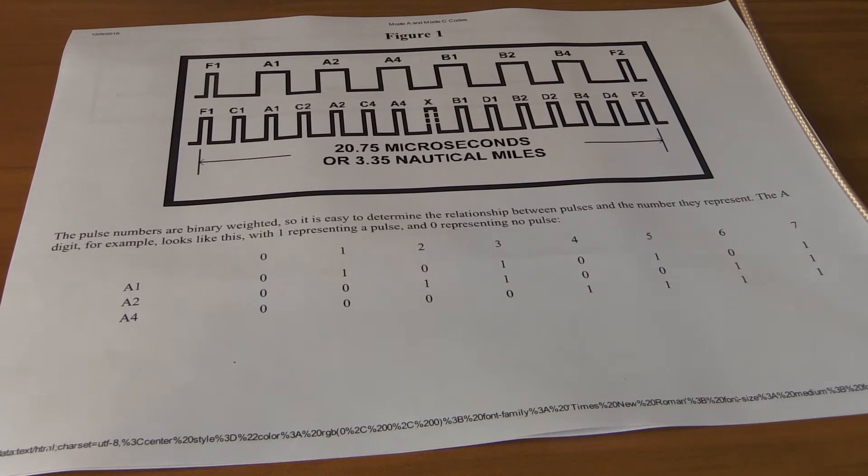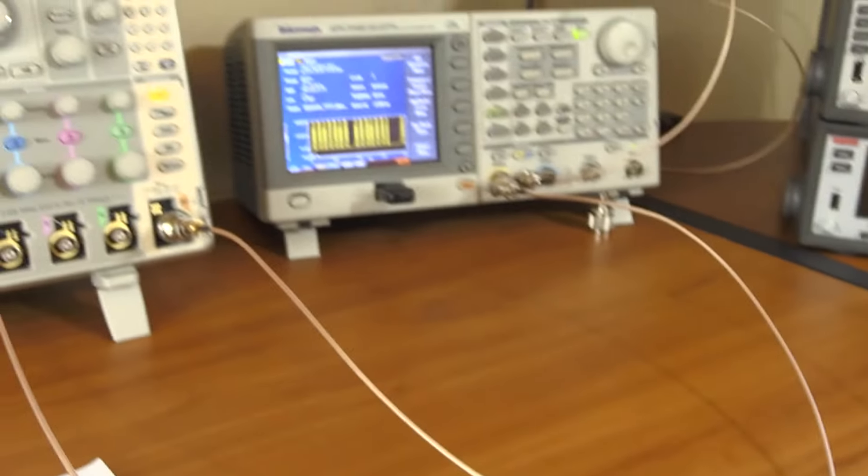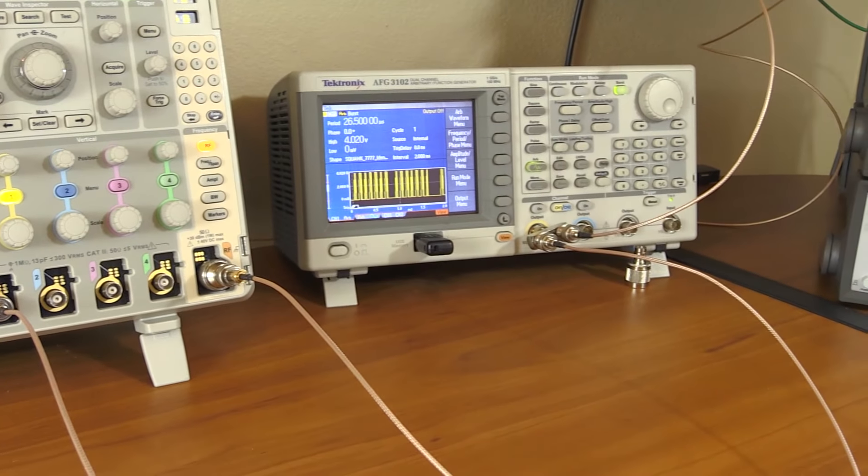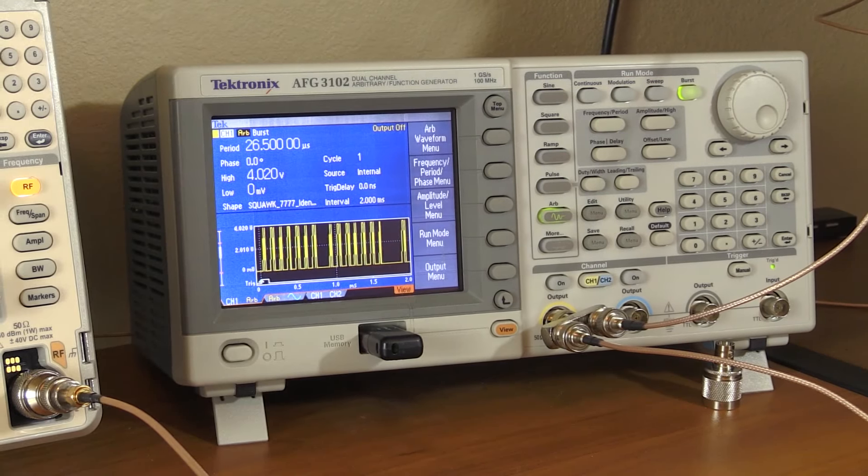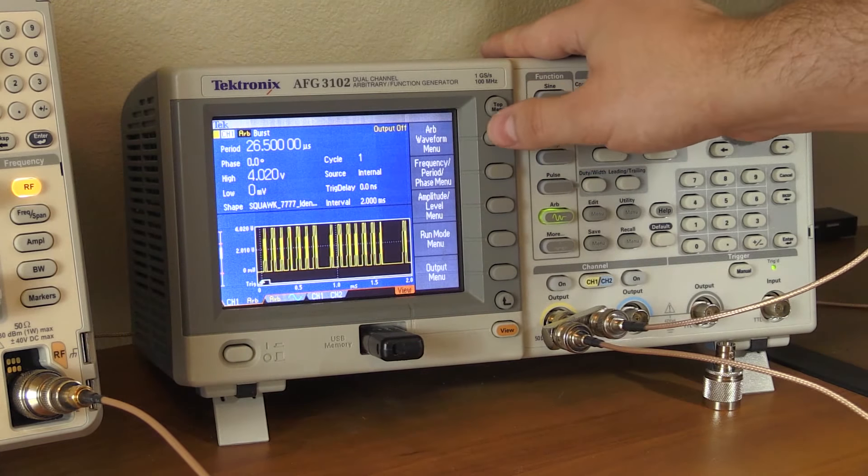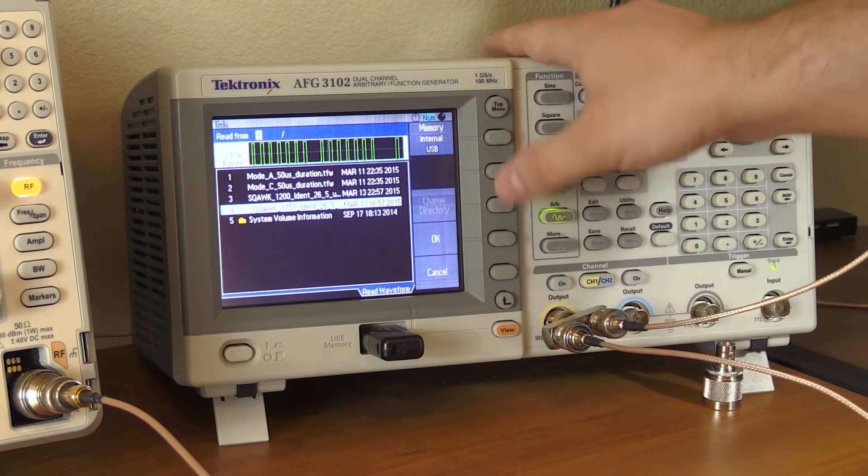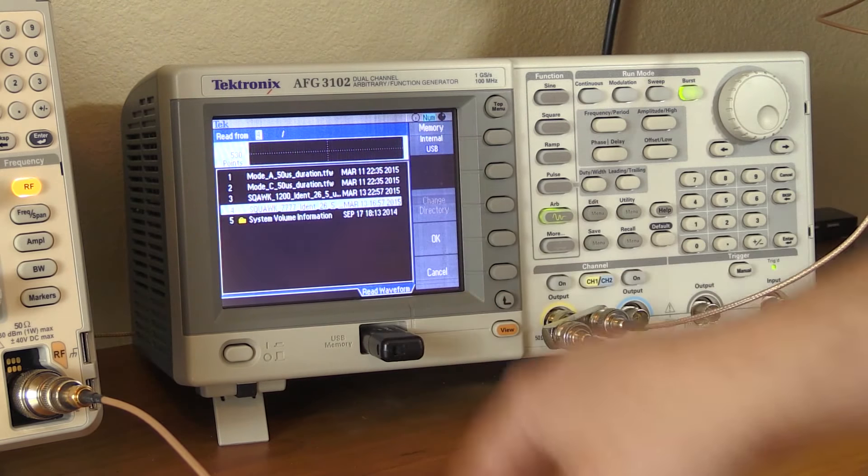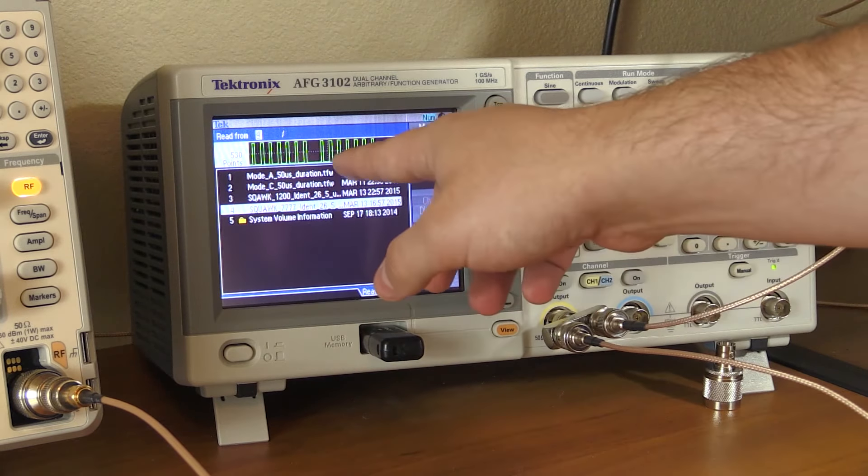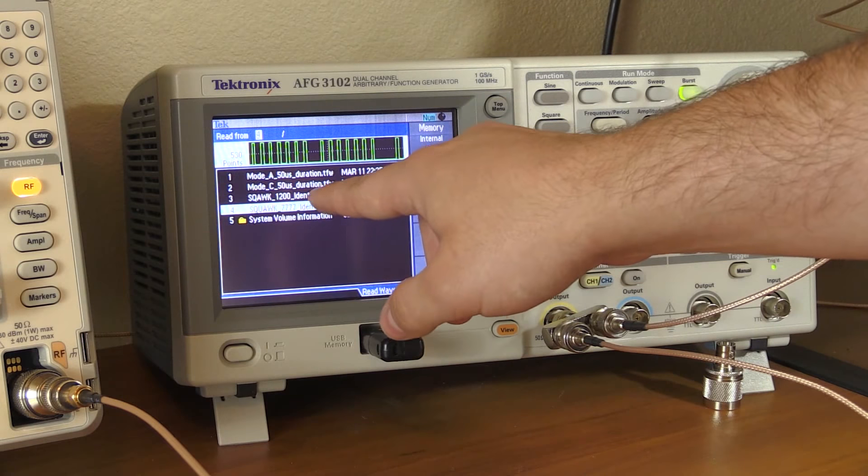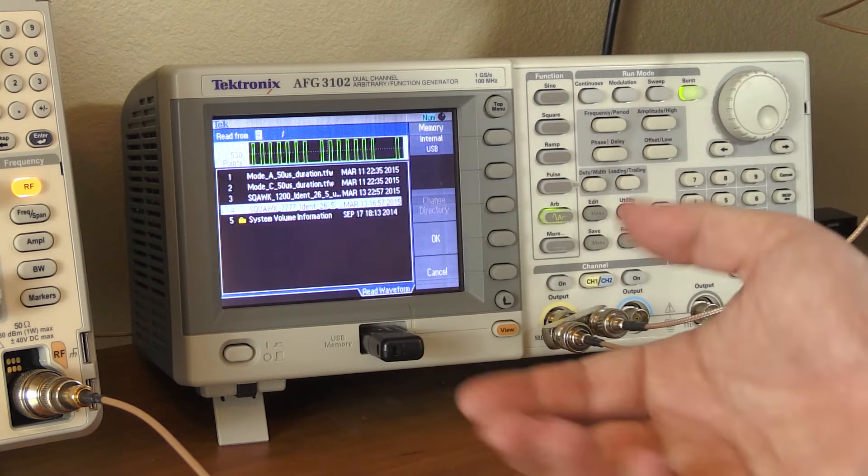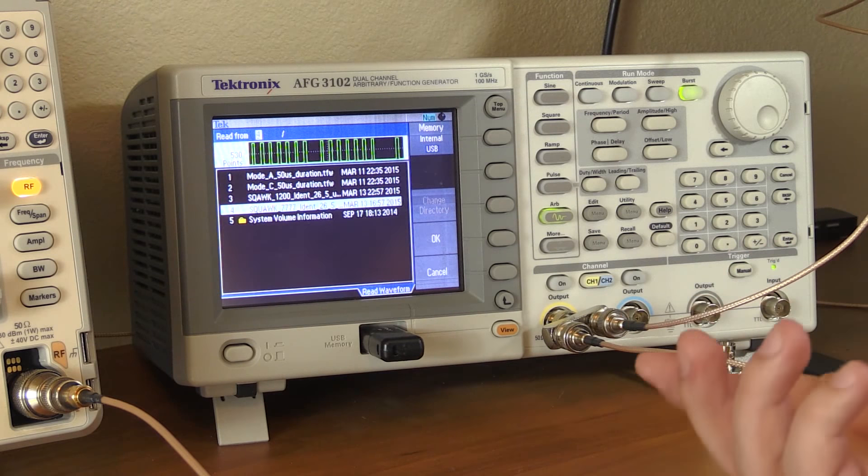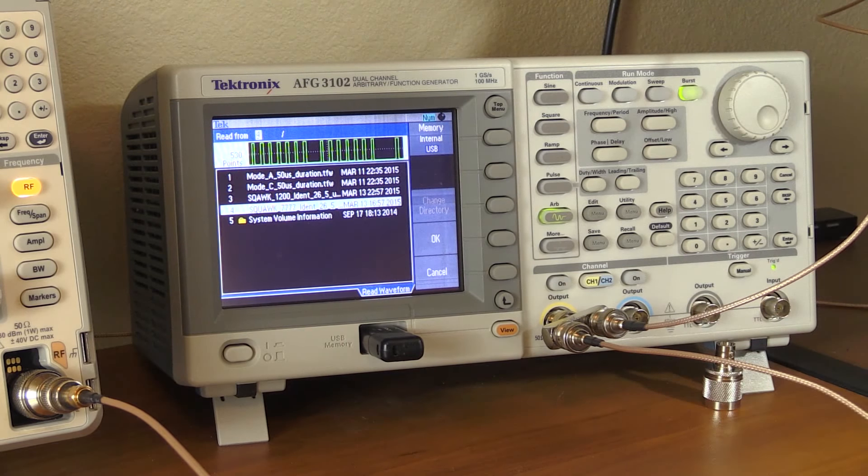So the first thing we need, of course, is we need a pattern. We need a pattern for transponder code 777 and I'm using the Tektronix AFG 3102 here and I will show you how I set this up. Obviously, this is an arbitrary waveform and as you can see, this USB stick contains both the interrogation pulses, but it also has squawk 1200 and 777 in here. Squawk, I haven't mentioned that yet. That's the name of that code because it squawks like a seagull.